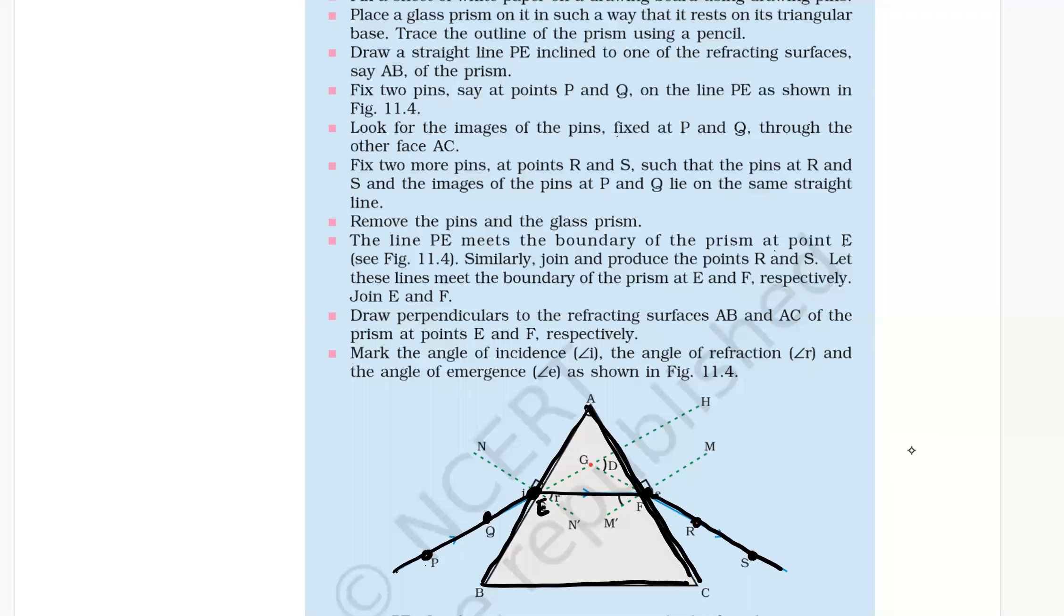Draw normals to the prism. Make one line perpendicular to surface AB and name it NN'. This is a normal. Similarly, draw MM' perpendicular to AC.